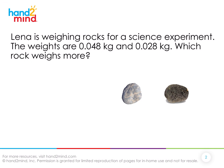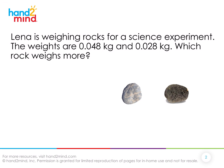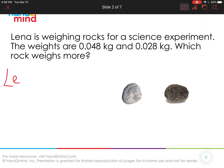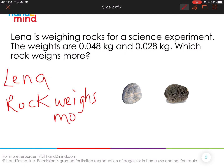Lena is weighing rocks for a science experiment. The weights are 48 thousandths of a kilogram and 28 thousandths of a kilogram. Which rock weighs more? So she put these on the scale and these are the measurements she got. What is Lena trying to figure out? She's trying to figure out which rock weighs more. We know that one rock is 48 thousandths of a kilogram and the other rock is 28 thousandths of a kilogram.